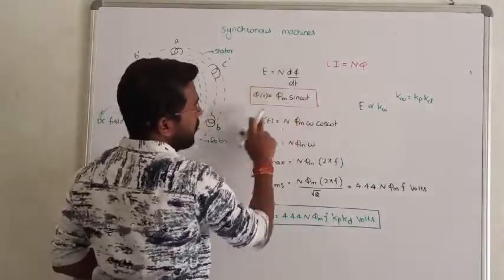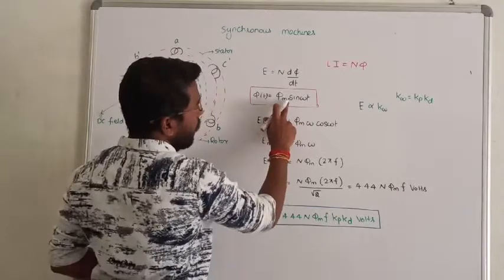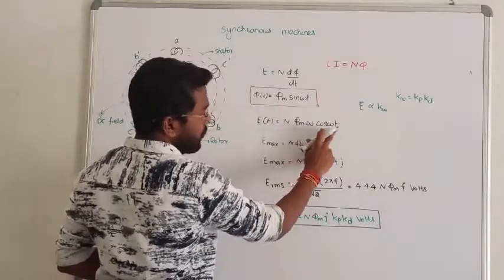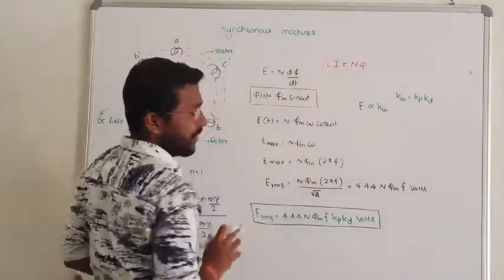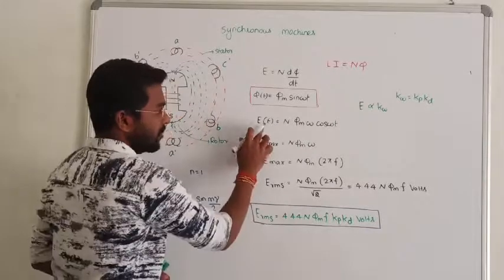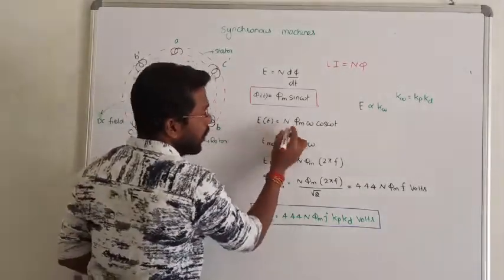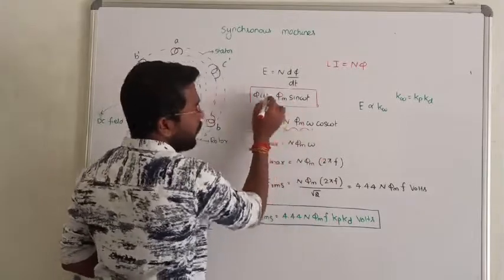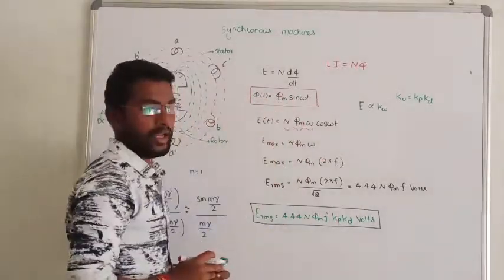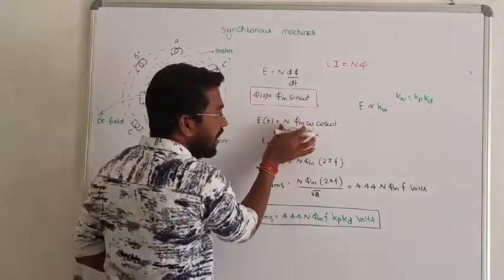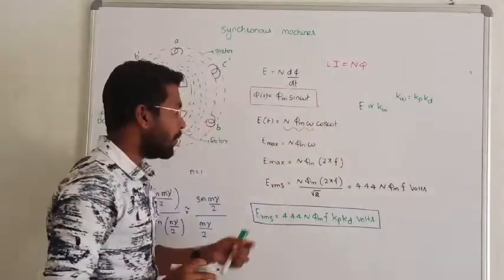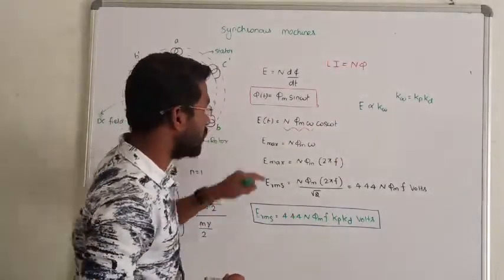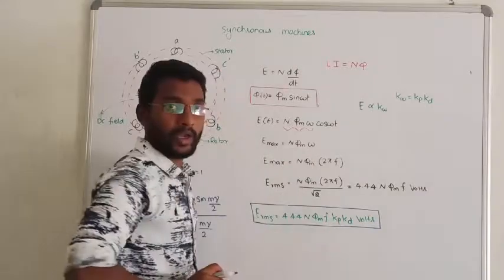Then E(t) becomes N times phi_m differentiated, which gives us N times phi_m times omega times cos omega t. The maximum voltage becomes N times phi_m times omega.